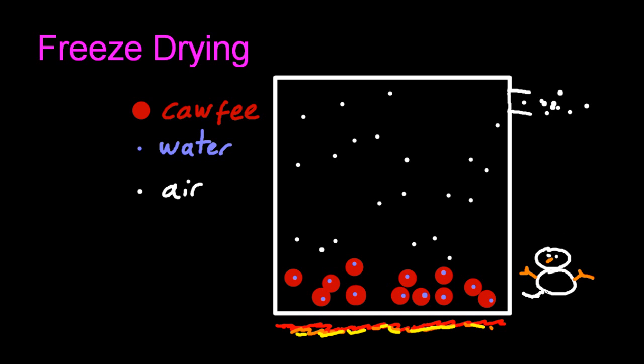And what happens now is the water molecules have enough energy to escape from the solid phase straight into the gaseous phase, sublimation. Now this couldn't happen before because it was colder and the air pressure above was keeping those water molecules in the coffee.